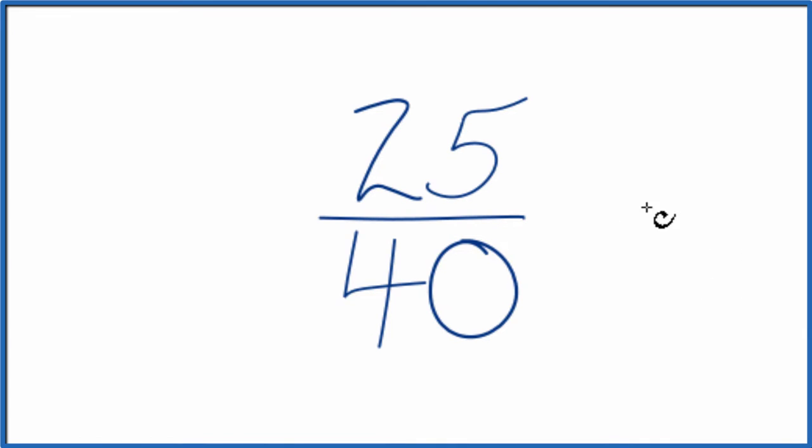So to do that, we need to find a common factor. Something goes into 25 and 40 evenly. So let's write the factors for 25 and 40.